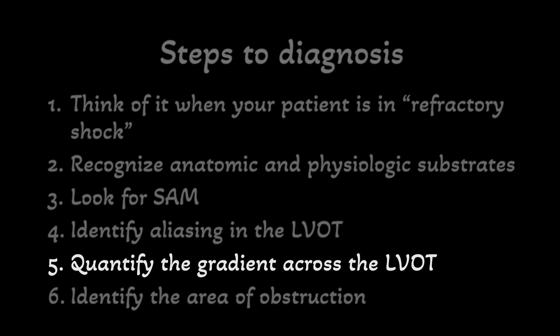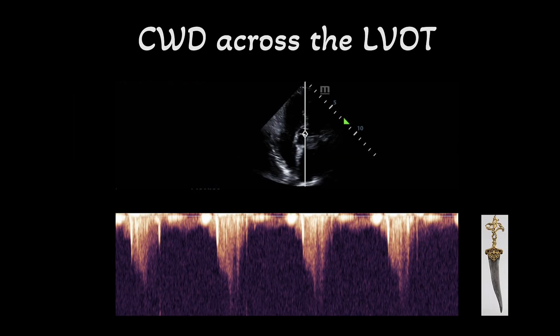Continuous wave Doppler, on the other hand, can detect an infinitely high velocity and is what is used to identify the severity of valvular diseases. It is also used to quantify the gradient across the LVOT or mid-cavity in obstruction. The classic waveform that appears is a dagger shape. At the beginning of the curve, blood is flowing at a slower velocity. As it encounters an area of narrowing, blood accelerates rapidly until it reaches the point of obstruction, at which blood flow stops abruptly.